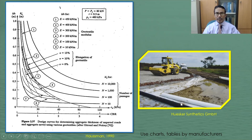This photo shows geosynthetic sheets being laid on top of soft cohesive soil, and aggregates are being placed on top of these geosynthetic sheets. In this case, the geosynthetic sheets act as a separator as well as provide reinforcement. By having this geosynthetic material, mixture between soft cohesive soil and the aggregate can be prevented. In addition, the geosynthetic will redistribute the stresses so that the bearing capacity of the soft soil can be increased.